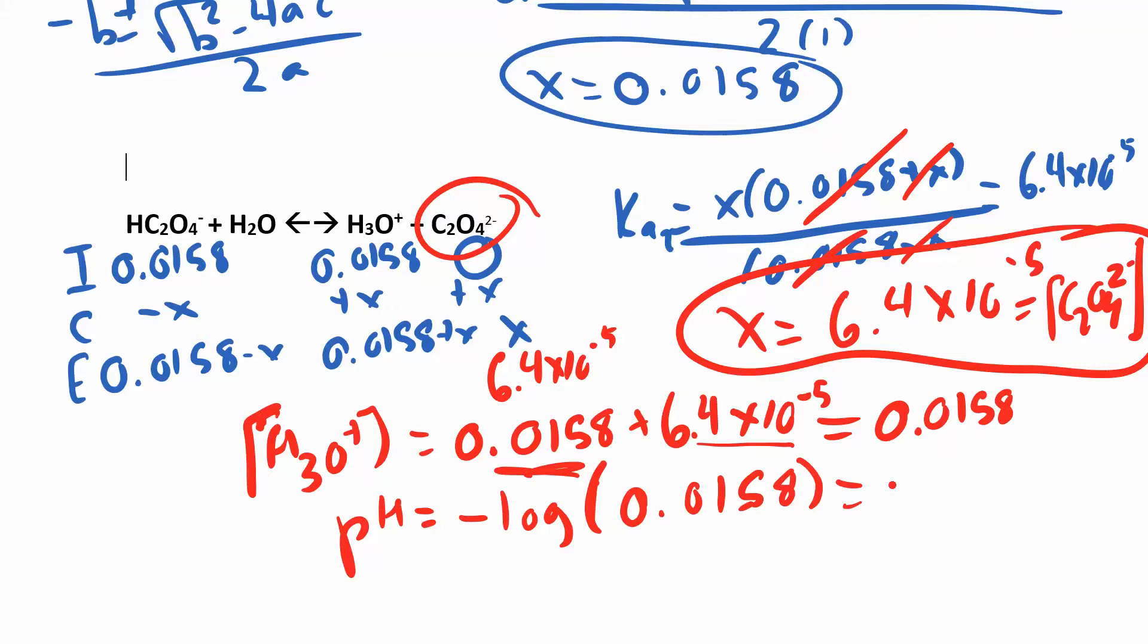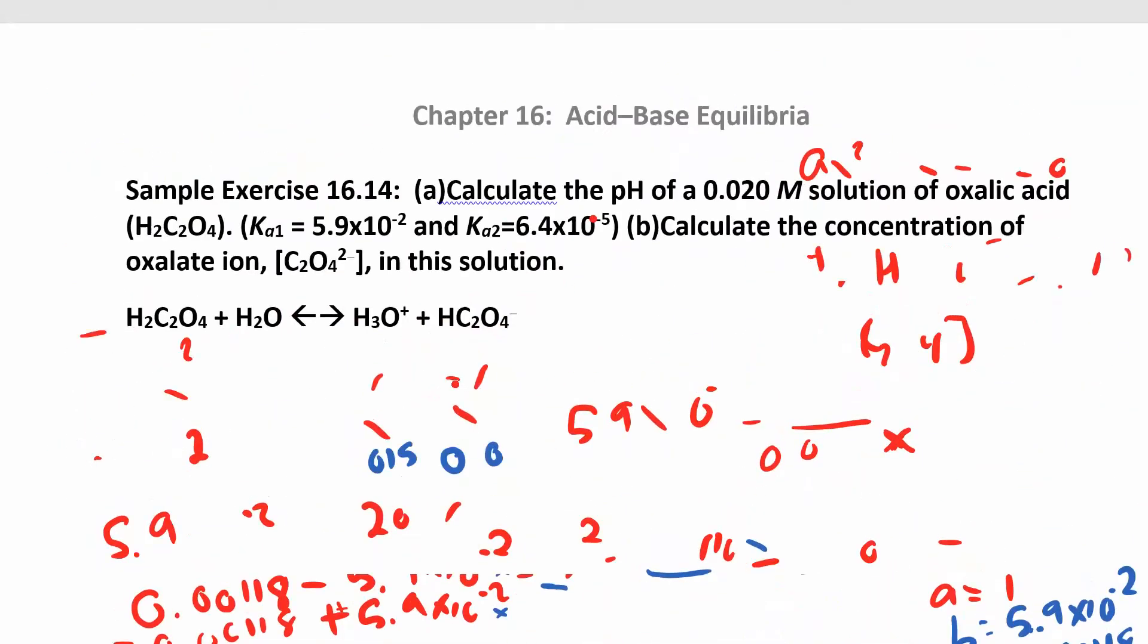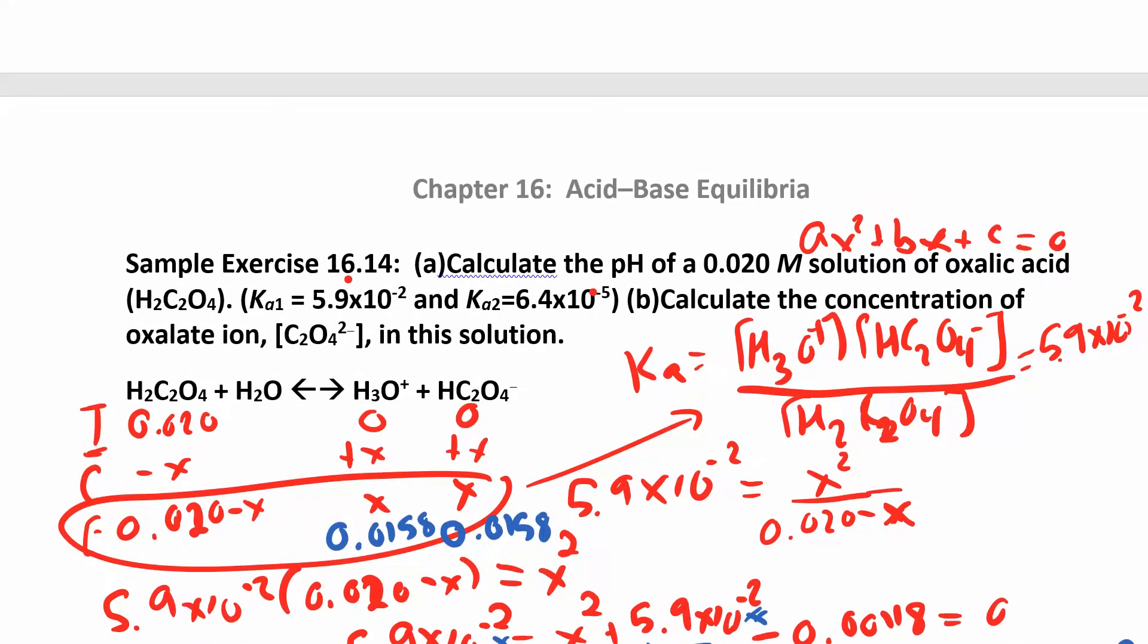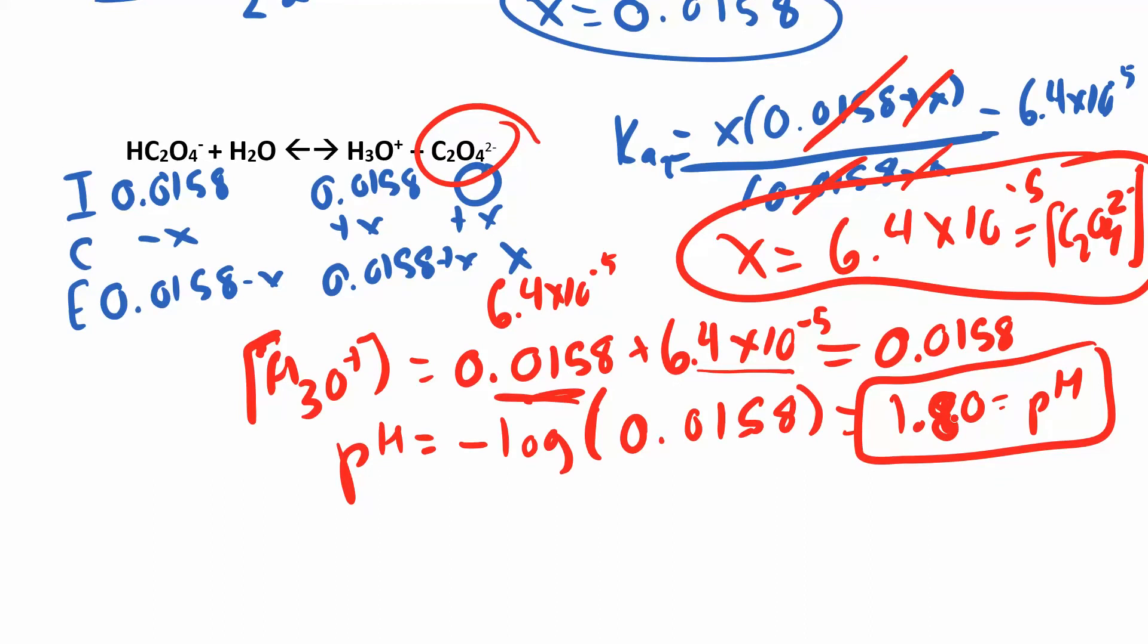Now we'll do negative log of 0.0158, which is 1.80 for the pH. There's no units on pH. 1.80 - I used two sig figs because if you go all the way back up, I've been carrying out one extra sig fig all the way through. But the Ka's both just had two sig figs and the initial concentration also had two sig figs. So your final answer, you're looking for the pH and you're looking for this ion concentration. We had to use the quadratic in this one.